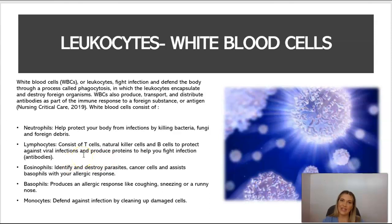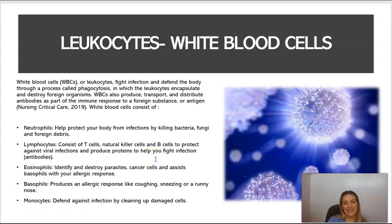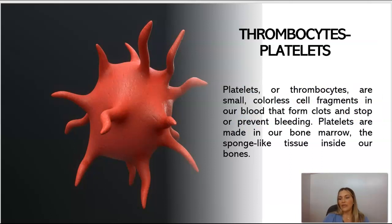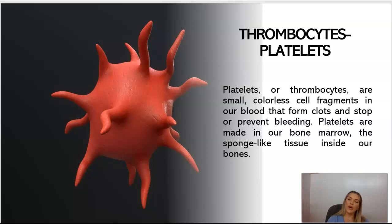Eosinophils help identify and destroy parasites and cancer cells, and assist basophils with allergic reaction responses. Basophils produce allergic responses like coughing, sneezing, or a runny nose. Monocytes defend against infection by cleaning up damaged cells. Last but not least, thrombocytes — otherwise known as platelets — are small, colorless cell fragments in the blood that form clots and stop or prevent bleeding. Platelets are made in the bone marrow, a sponge-like tissue inside our bones.